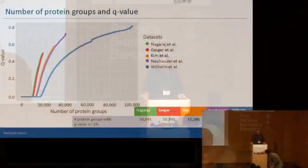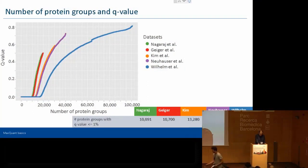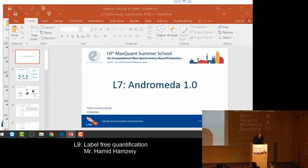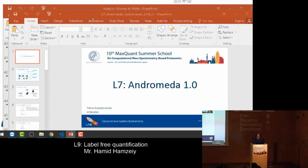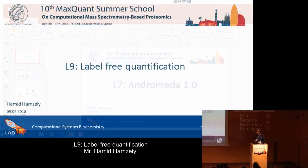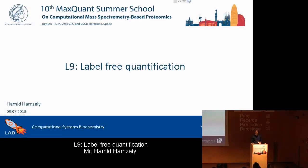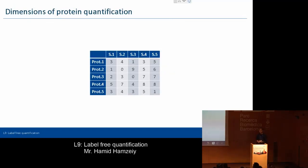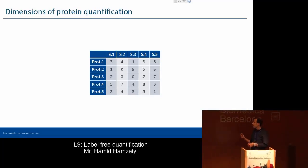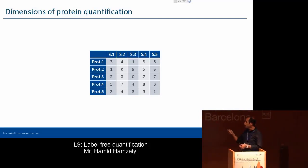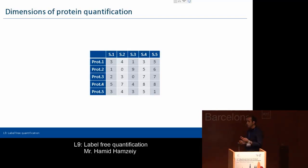Hello everyone, and thank you Pavel for the very nice introduction. I hope you've been enjoying the summer school, and now you're looking forward to getting to know a little bit more about what goes on under the hood in the label-free side of MaxQuant. I'd like to start off by talking about the different dimensions of protein quantification that we can do. Essentially, after you do your experiment, you end up with a table where you have your samples in the columns and your proteins in the rows.